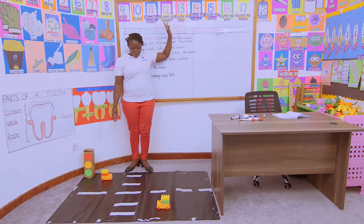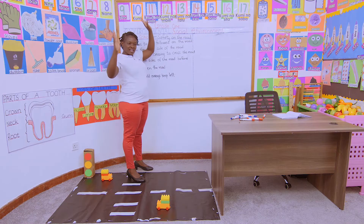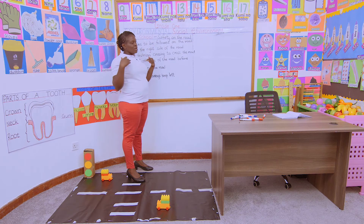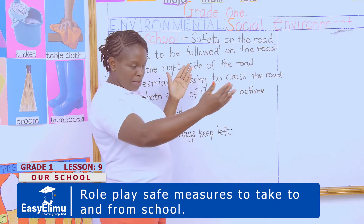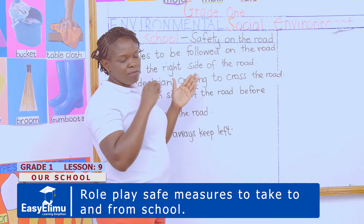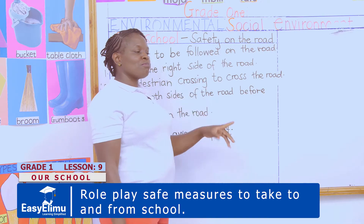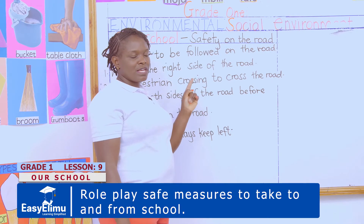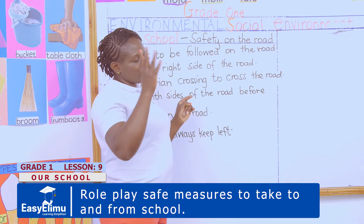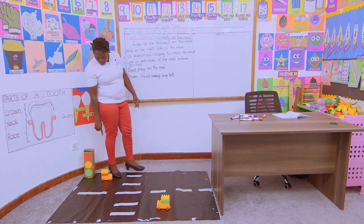All drivers are supposed to keep left — show me your left hand. And pedestrians are supposed to walk on the right-hand side. Motorists keep left so that if the pedestrian comes from the right side, the driver is able to see them to avoid accidents. All motorists should keep left and all pedestrians should keep right.